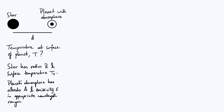Hi everyone. In this video we are going to develop a model that can be used to estimate the temperature of a planet with an atmosphere like the Earth. I've already sketched out a diagram to show what's going on and listed all the key parameters. The ultimate goal is to find an expression for the temperature on the surface of the planet in terms of all of the other parameters.